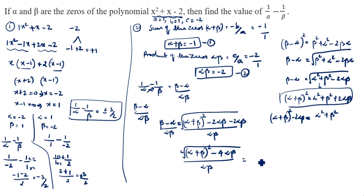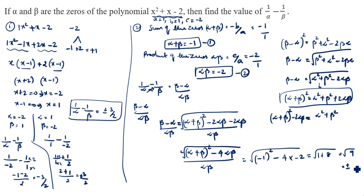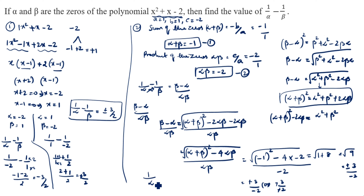Now substituting the values: alpha plus beta squared is minus 1 squared equals 1, and 4 times alpha beta equals 4 times minus 2 equals minus 8. So 1 minus minus 8 equals 1 plus 8 equals 9. The square root of 9 is plus or minus 3. Divided by alpha beta which is minus 2, we get plus 3 over minus 2 or minus 3 over minus 2, giving the final answer as 1 by alpha minus 1 by beta equals minus 3 by 2 or plus 3 by 2, i.e., plus or minus 3 by 2.